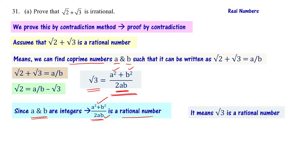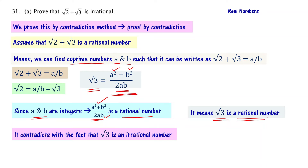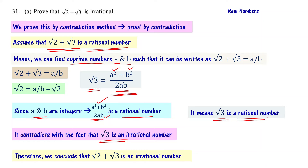But we already know that root 3 is not rational — it is irrational, because it is the square root of a prime number. The assumption leads to root 3 being rational, which contradicts the known fact that root 3 is an irrational number. Therefore whatever assumption we made is wrong — root 2 plus root 3 is a rational number is wrong — and we conclude that root 2 plus root 3 is an irrational number. This is the proof by contradiction method.